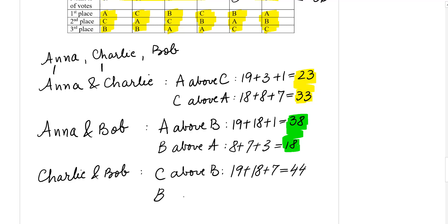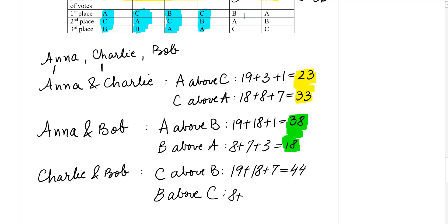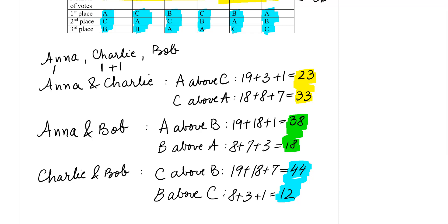Now let's see where Bob is above Charlie. Bob is above Charlie in one column giving 8 points, another giving 3 points, and the last one giving 1 point. So Bob's total is 12 points. Since Charlie has 44 points versus Bob's 12, Charlie wins this comparison and gets another point. The final tally is: Anna — 1 point, Charlie — 2 points, Bob — 0 points.